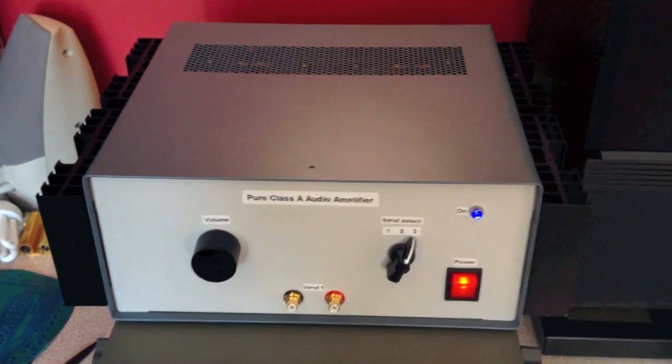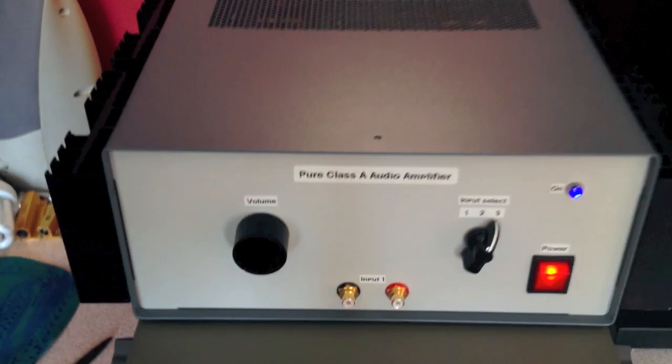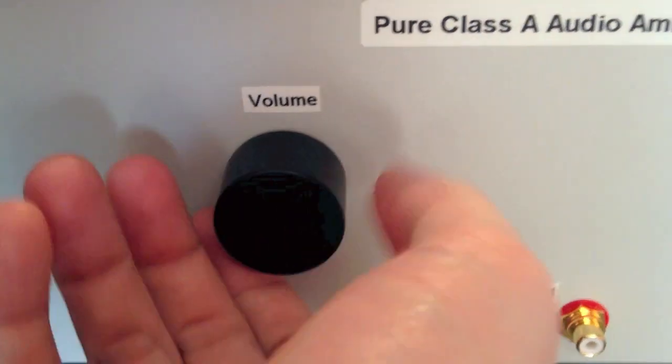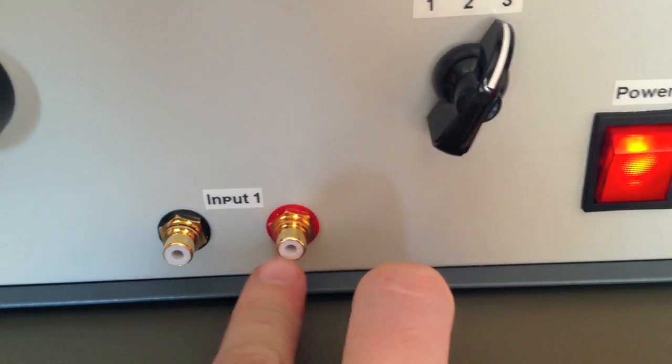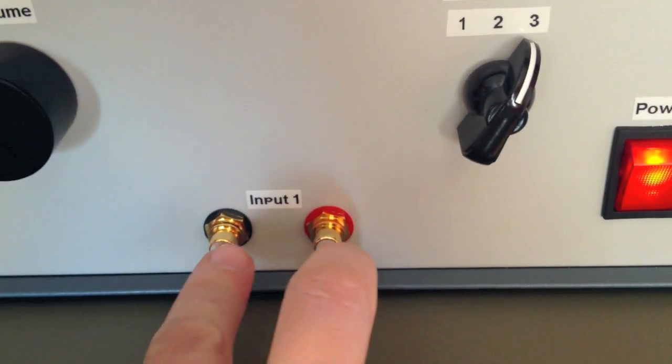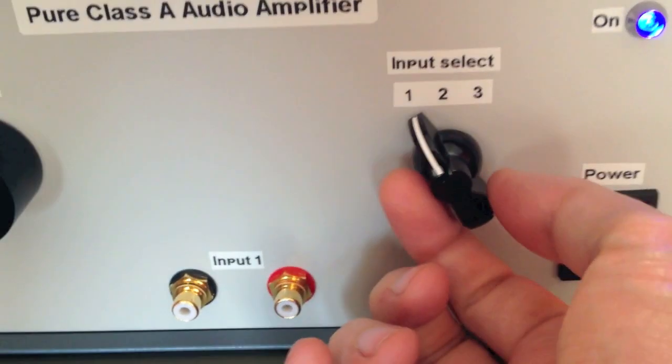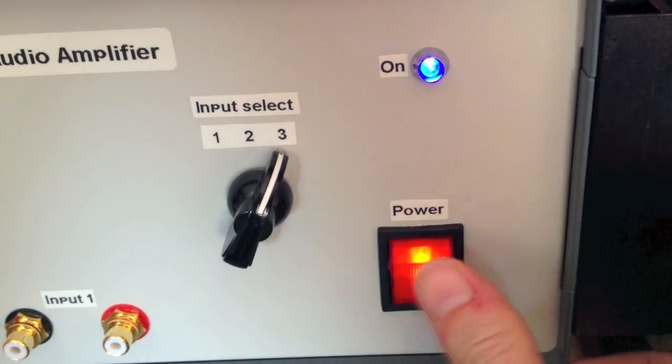This is a homemade Class A audio amplifier based on the Zen schematic. On the front we've got a volume control, an input for iPods or other devices, an input selector switch where one is the front and two and three are on the rear, and a power switch.